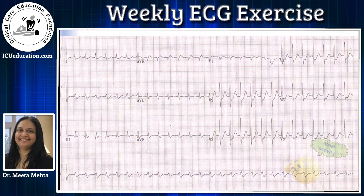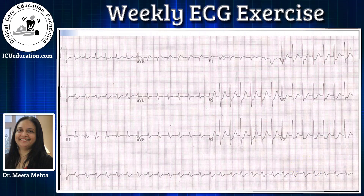Let us look at the atrial activity — the P waves in this patient. If you look at lead 2, 3, AVF, or long lead 2, you cannot see P waves anywhere, meaning P waves are absent. But if you closely look at lead V1, you can figure out that there are spiky, pointed P waves coming just at the end of QRS complexes. This produces a pseudo-R wave pattern — they are not true R prime waves, but are produced because of the presence of P waves at the end of the QRS complex.